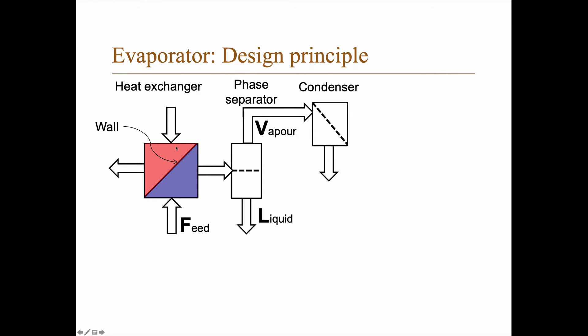So what do we use for heating in the heat exchanger? Often steam is used. So we take in steam and let that condense and hence use the evaporation enthalpy of the steam to vaporize part of the feed.